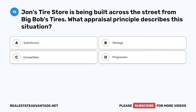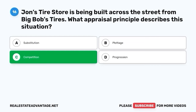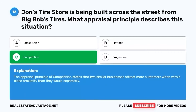Question 16. John's tire store is being built across the street from Big Bob's Tires. What appraisal principle describes this situation? A. Substitution. B. Plottage. C. Competition. D. Progression. The correct answer is C. Competition. The appraisal principle of competition states that two similar businesses attract more customers when within close proximity than they would separately.